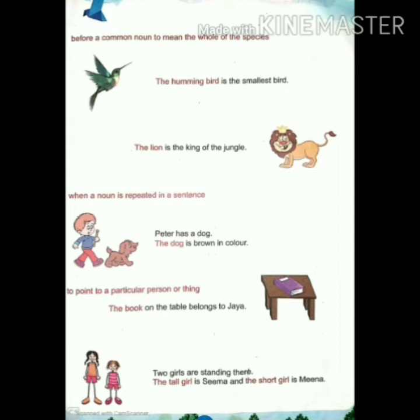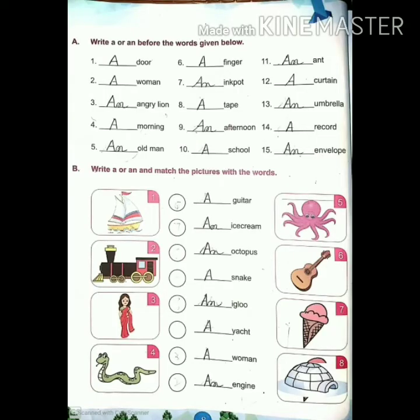The is used to point out a particular person or thing. For example: the book on the table belongs to Jaya — we are talking about a particular book on the table. Also: two girls are standing there; the tall girl is Sima and the short girl is Mina. We are talking about those specific girls we can see standing there.